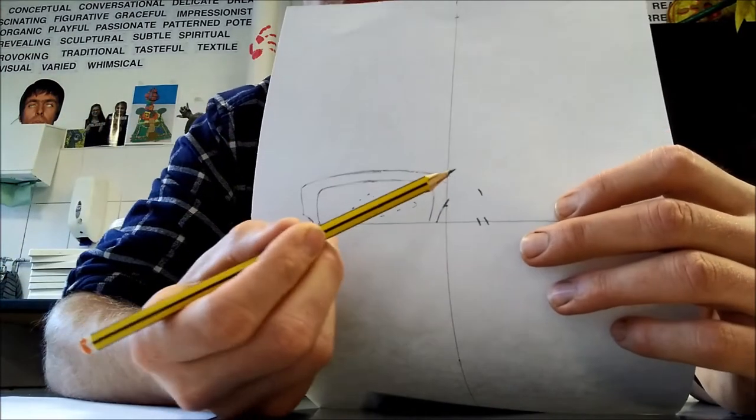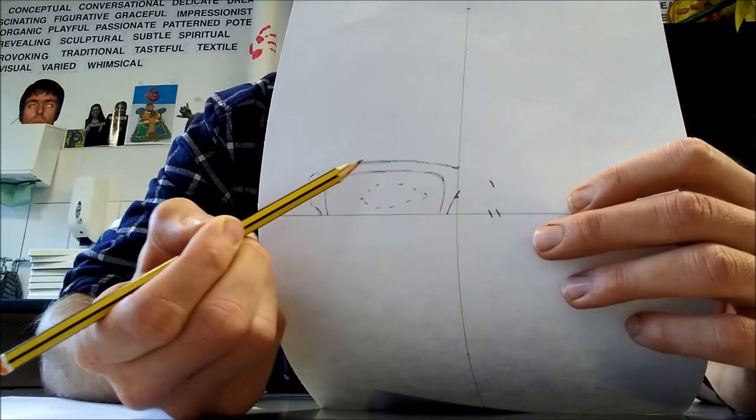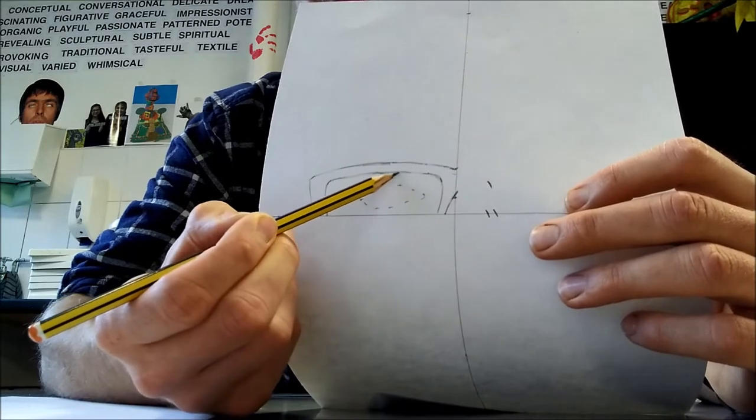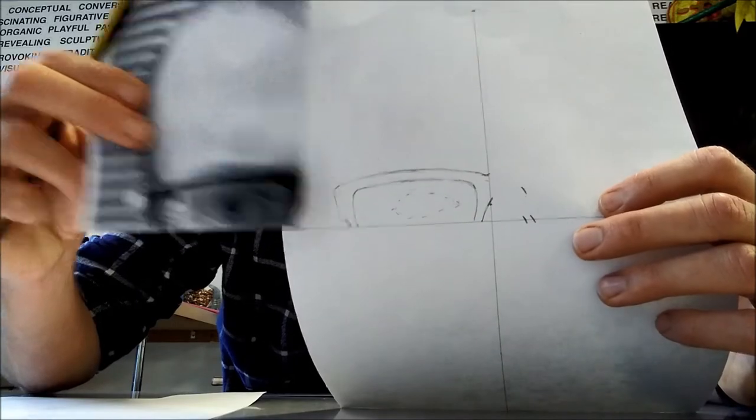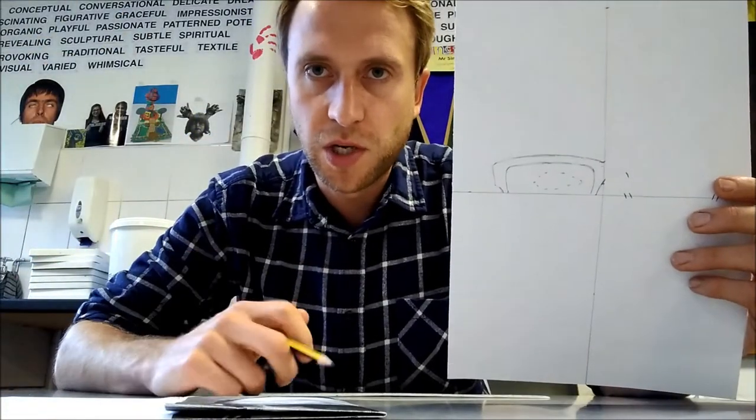And once you've got these little marks, you need to start drawing in the lines really smoothly. So you need to be looking at your picture and then drawing them in as carefully as you can. So this video is just showing you how to do the outline. I will go on to tone in the next video.